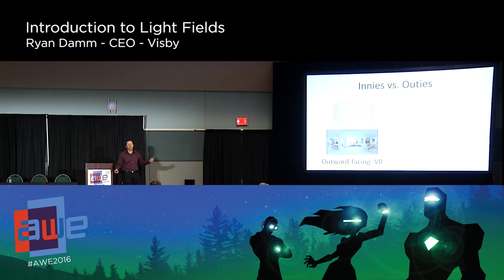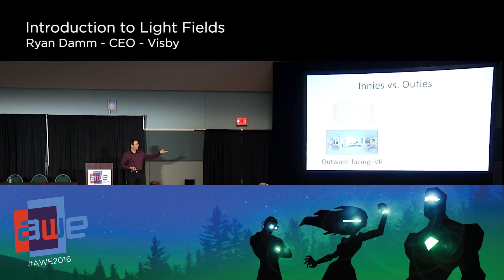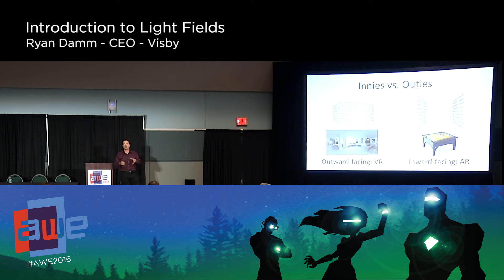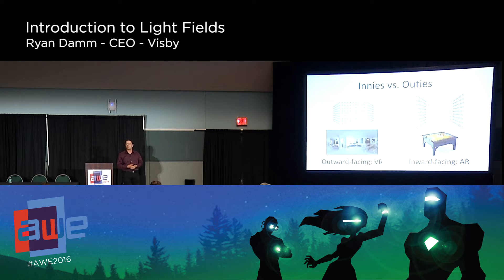Light fields are helpful for VR and AR. If we're synthesizing views, you can wrap light fields all around a user — that's basically immersive VR with stereo and positional tracking. The inverted version of that: if you wrap light fields inward around an object, you can use that to recreate a hologram of an object for an AR headset, like playing a basketball game on your coffee table. That's how light fields actually serve both markets properly.